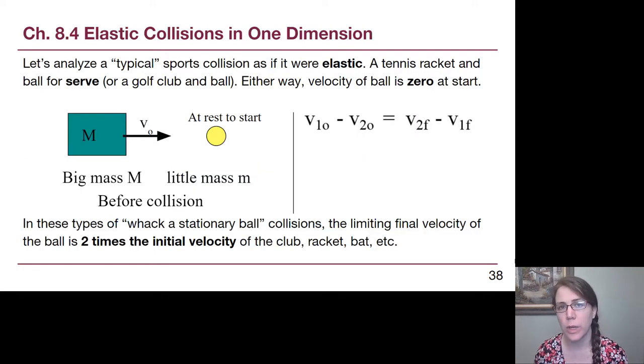So let's start with a typical sports collision that we might see between a stationary ball and a higher-mass piece of equipment. So I'm thinking a tennis racket and a ball when it's being served, or a golf club and a ball when it's on a tee. In either case, the velocity of the ball is zero at the start, and in those typical examples, you have follow-through as you are swinging that racket or club.